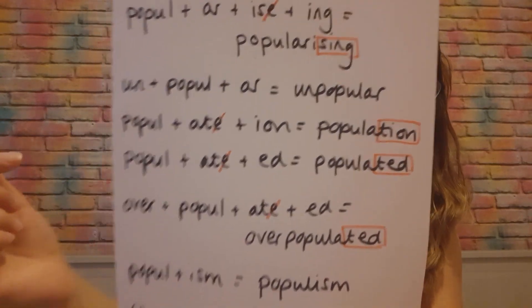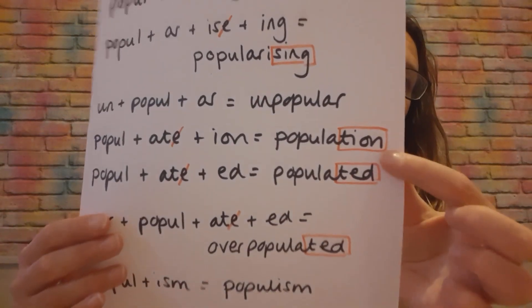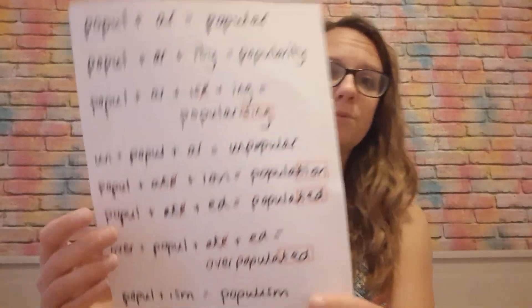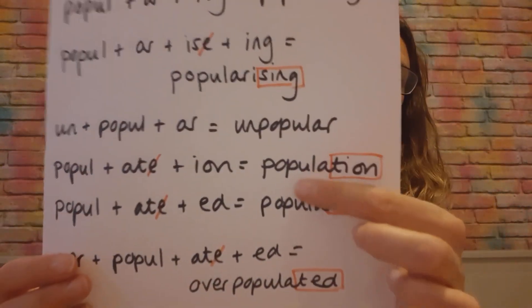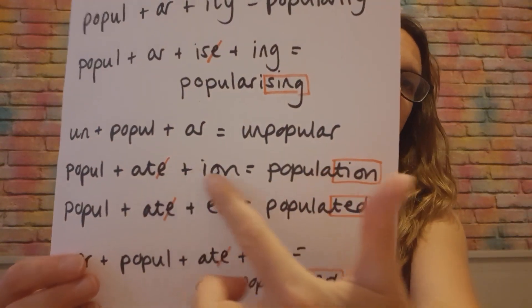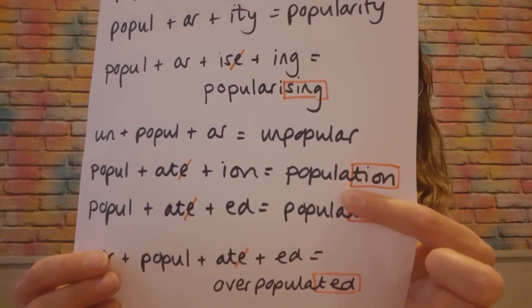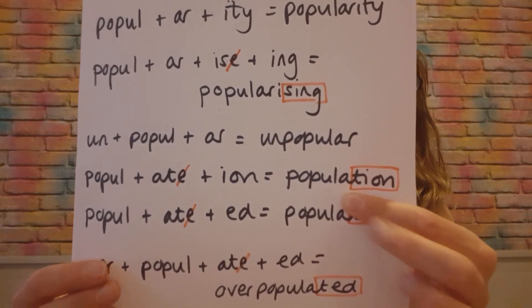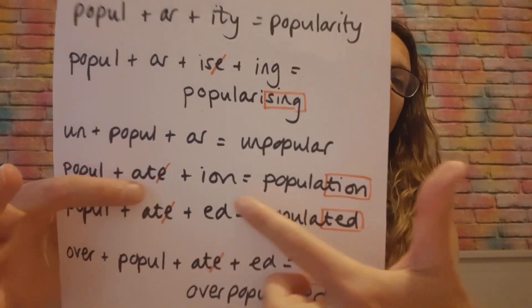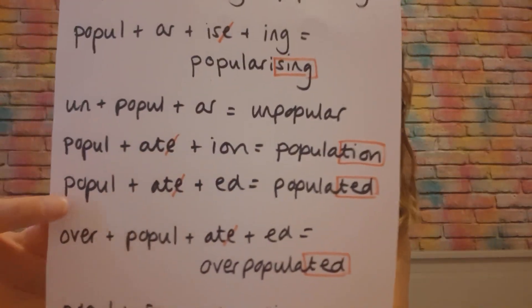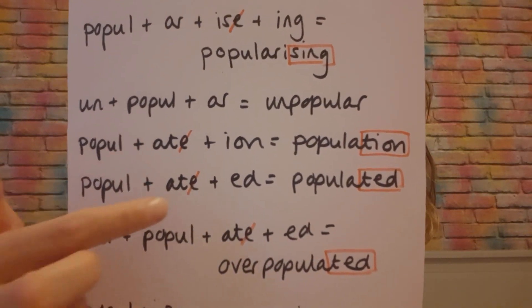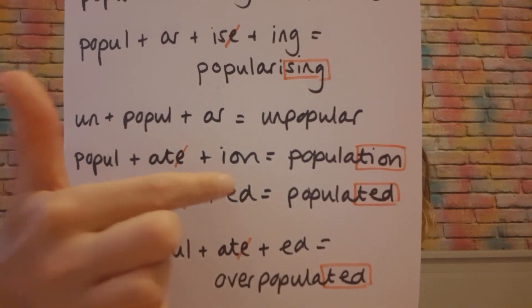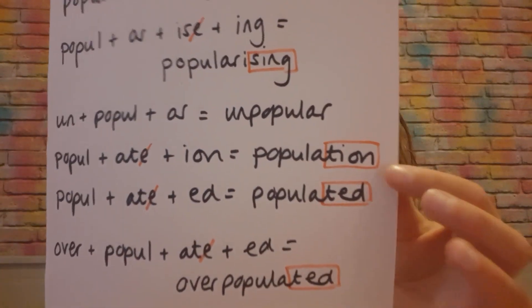Now we go on to the 'populate' ones. We've got 'population' — that's the number of people in an area or a country. Again, you can see it's relating to the people. For the spelling, there's the 'shun' rule: drop the 'e,' add 'i-o-n.' It's a 't-shun' because we have a 't' in 'populate,' then we add 'i-o-n.' We've also got 'populated' — we lose one of the two e's for that past tense.